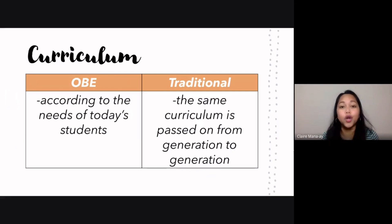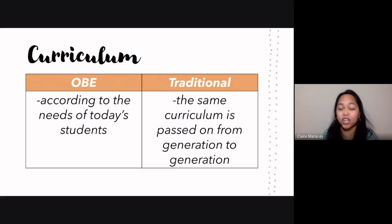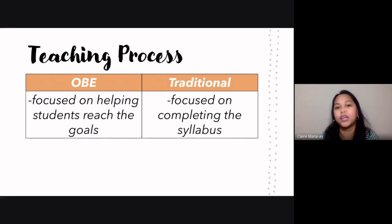As for their curriculum, OBE sets curriculum according to the needs of today's students — what students need to be successful in present-day society. Traditional curriculum, on the other hand, is passed on from generation to generation, with really no change in the way it is taught or written. Based on the teaching process, outcome-based education is focused on helping students reach the outcomes or goals, while traditional education is focused on completing the syllabus for the school year or trying to finish the entire book.